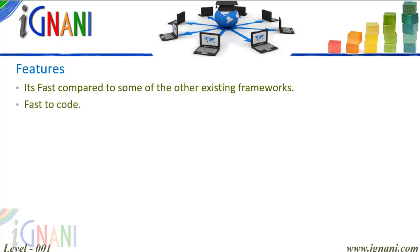FastAPI increases speed to develop features by about 200 to 300 percent compared to other web frameworks on Python. It also reduces bugs by about 40 percent of human-induced errors because of the libraries it supports. It has great editor support with completion everywhere, and you spend less time debugging.